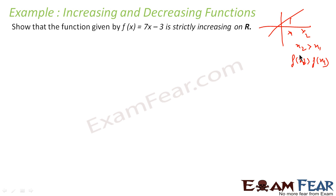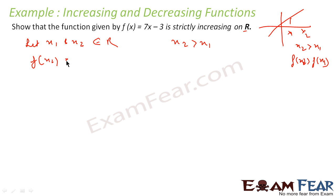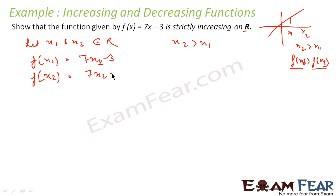Let x1 and x2 be two points in R, and let x2 be greater than x1. Let's find f(x1): f(x1) = 7x1 - 3. I am finding this because I need to prove that f(x2) is greater than f(x1). Similarly, f(x2) = 7x2 - 3.